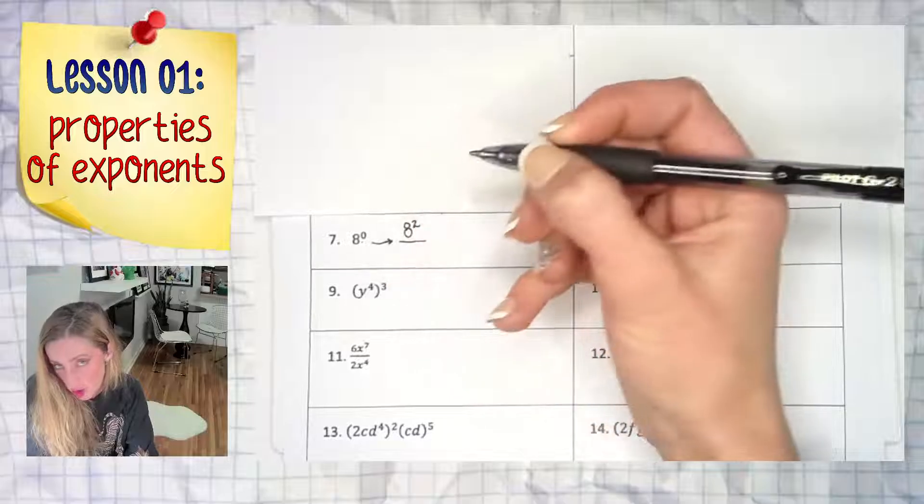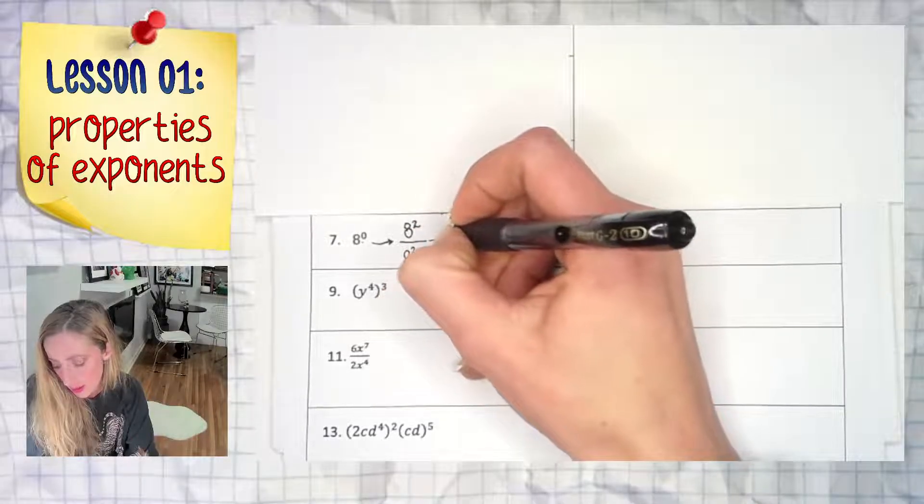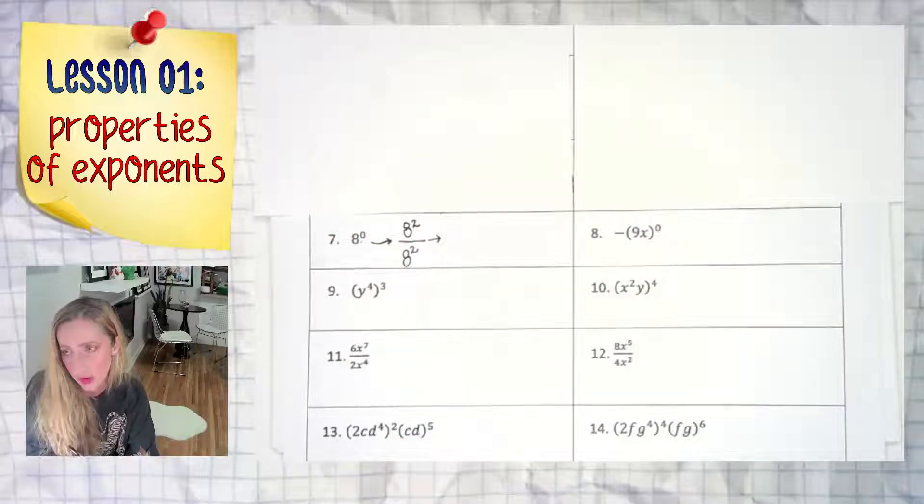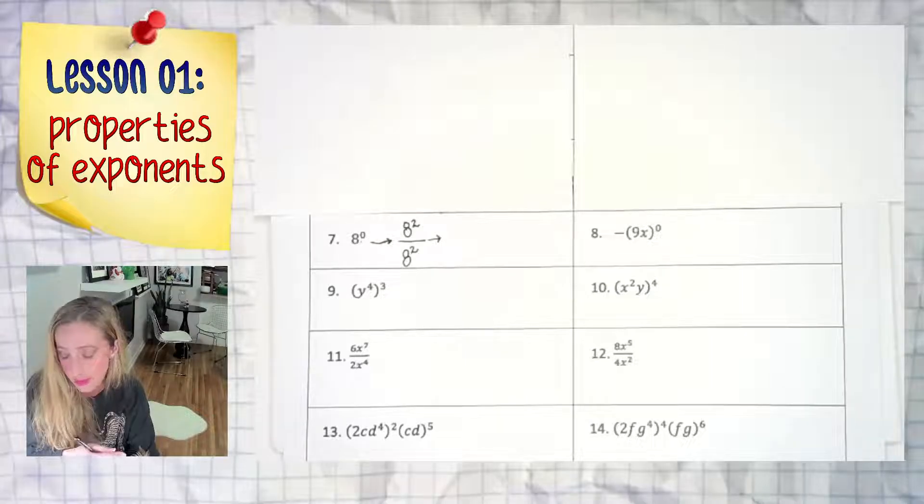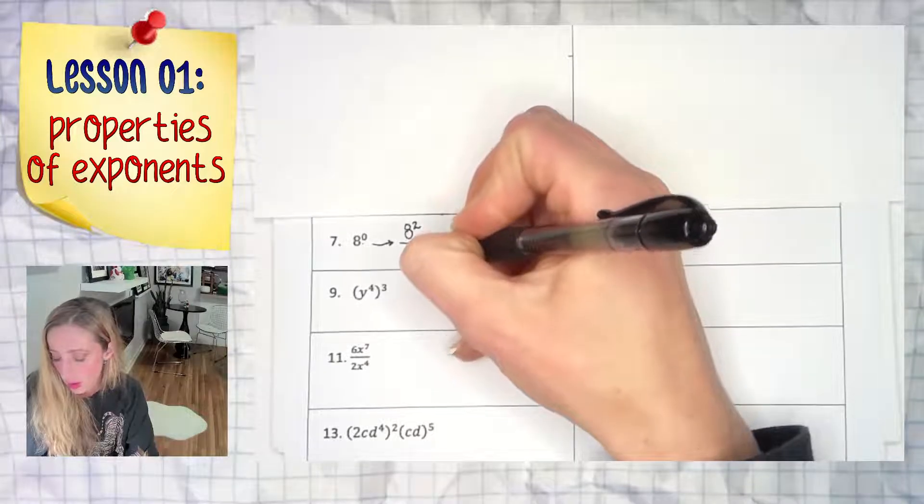What's the rule? Well, there's two rules. One rule is anything divided by itself is equal to one, except zero over zero, but that's a different conversation. So there's that.